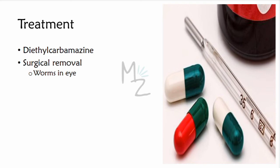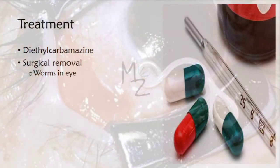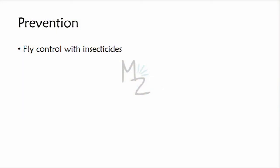Treatment: diethylcarbamazine eliminates the microfilariae and may kill the adult worms. Surgical removal is also an option — worms in the eyes may require surgical excision. Prevention: control of the fly by insecticides can prevent the disease.